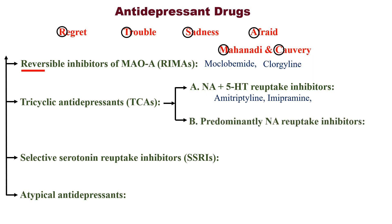The second subdivision of tricyclic antidepressants is predominantly noradrenaline reuptake inhibitors. Examples are nortriptyline and desipramine. Notice that in the first subcategory we had amitriptyline, and here we have nortriptyline. There it was imipramine, and here it is desipramine.